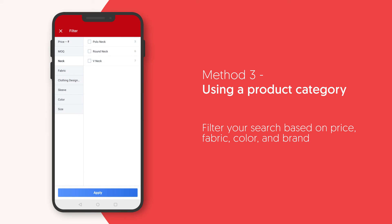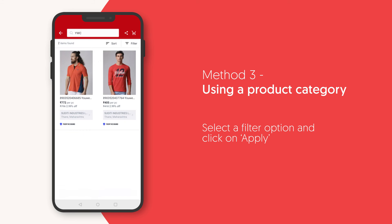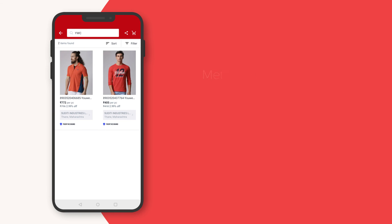Similarly, you can filter your search from the options like price, fabric, color, and brand, etc. Select a filter option and click on apply. This will show you listings that match the filter criteria that you have set.